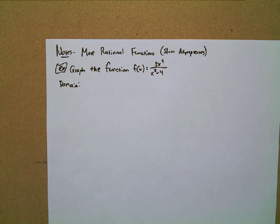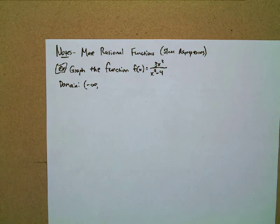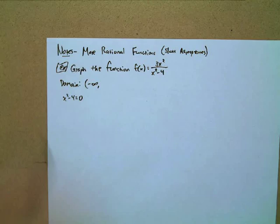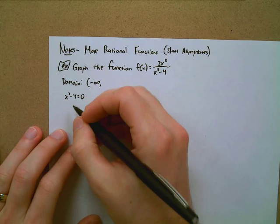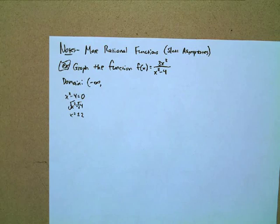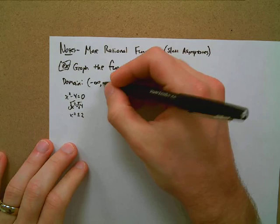We can start at negative infinity. We'll set the denominator equal to zero — x² minus 4 set equal to zero — to find when our function is undefined. Adding four to both sides and taking the square root gives us plus or minus two. So on the number line, we start at negative infinity and go to negative two.